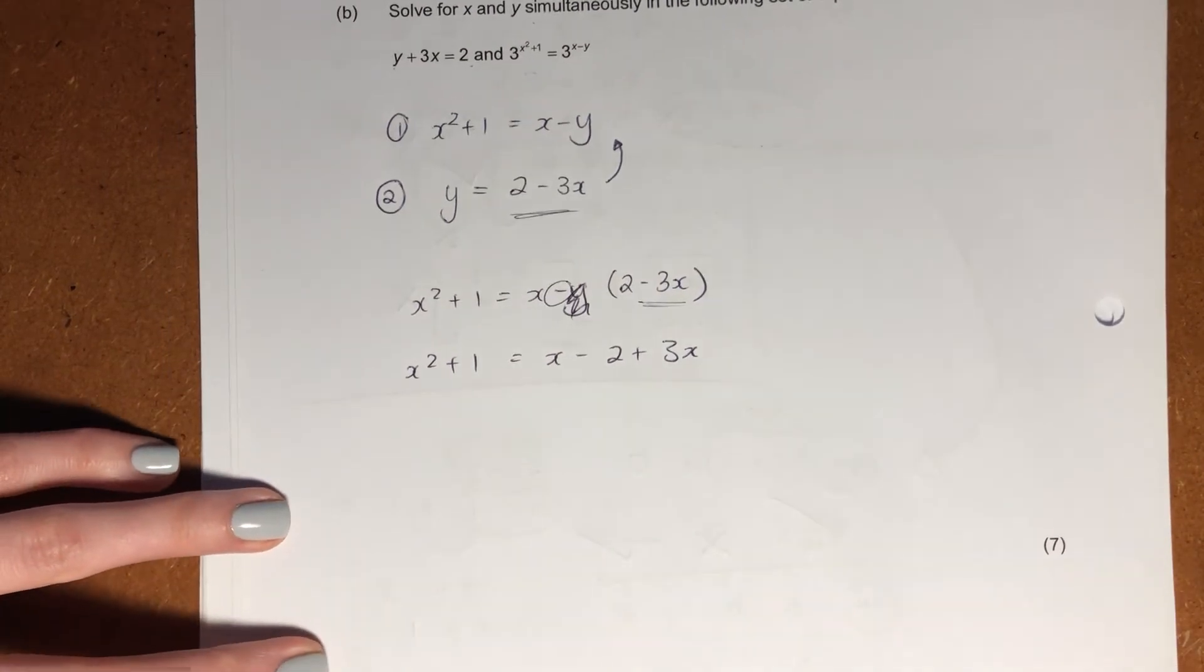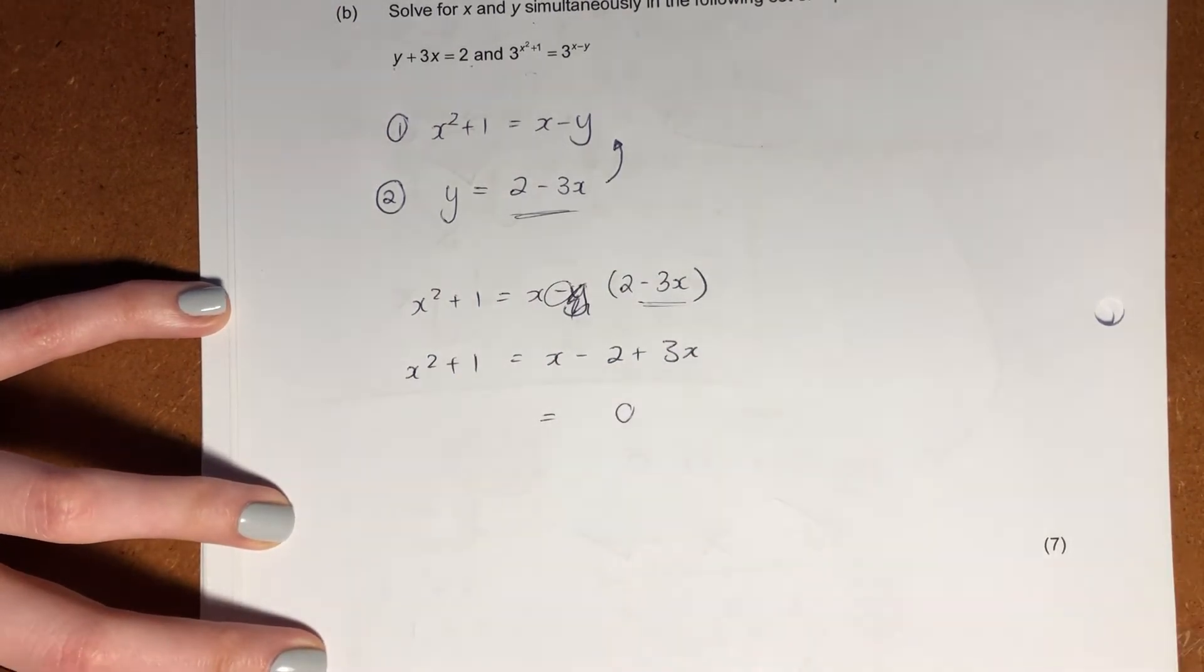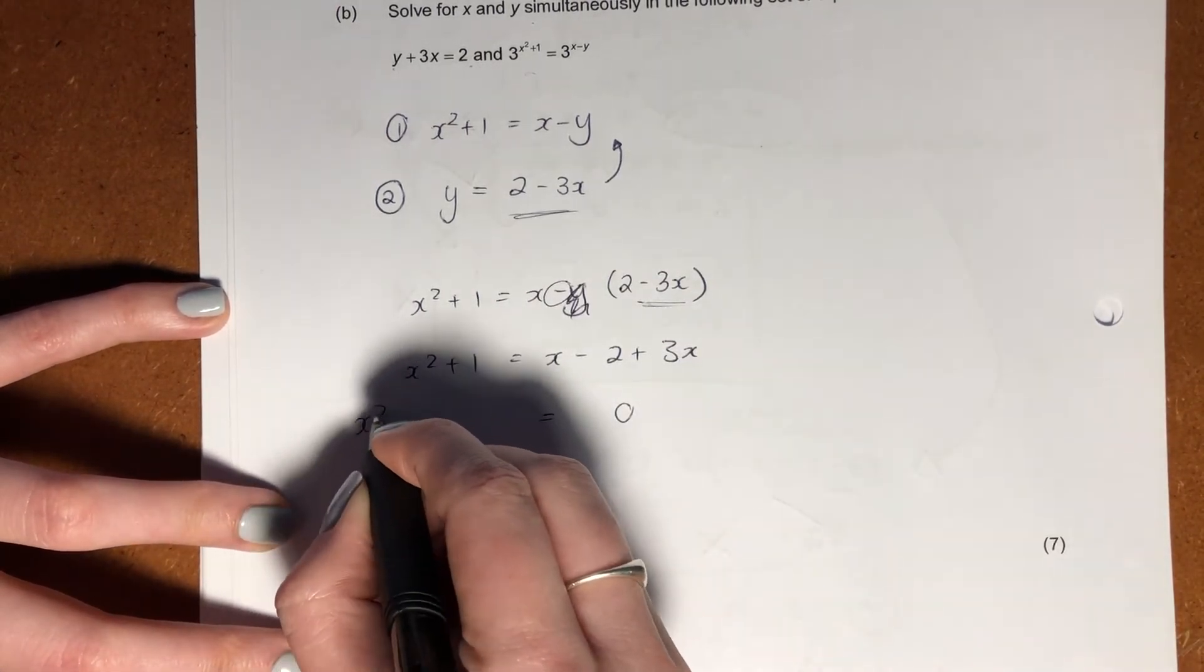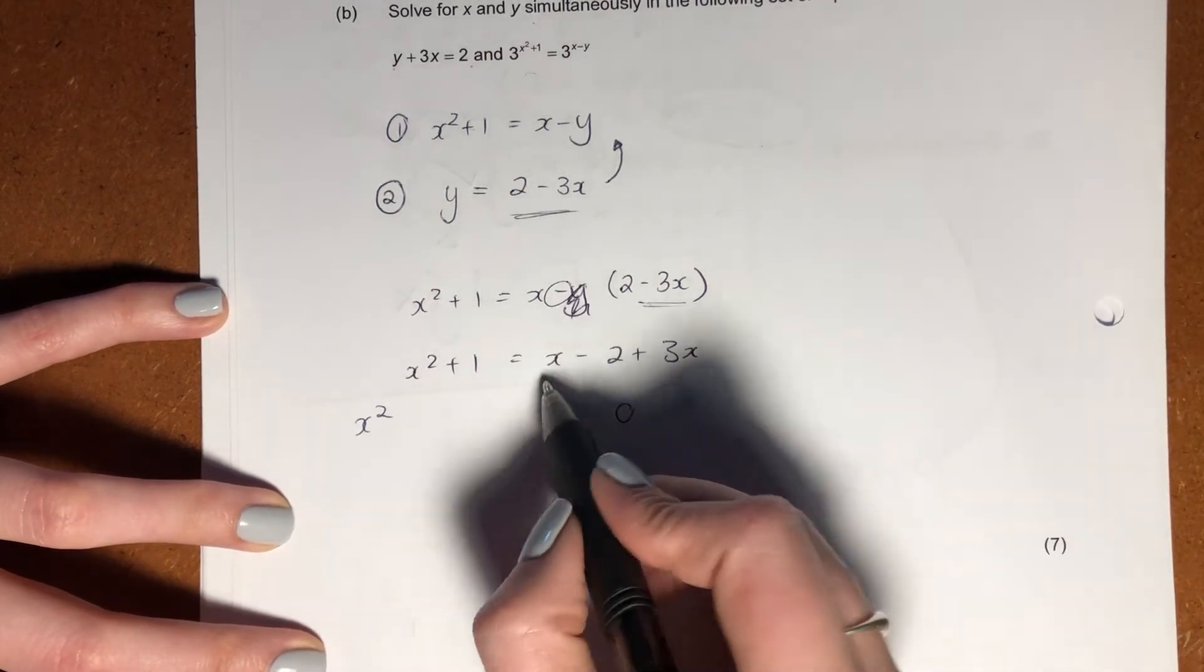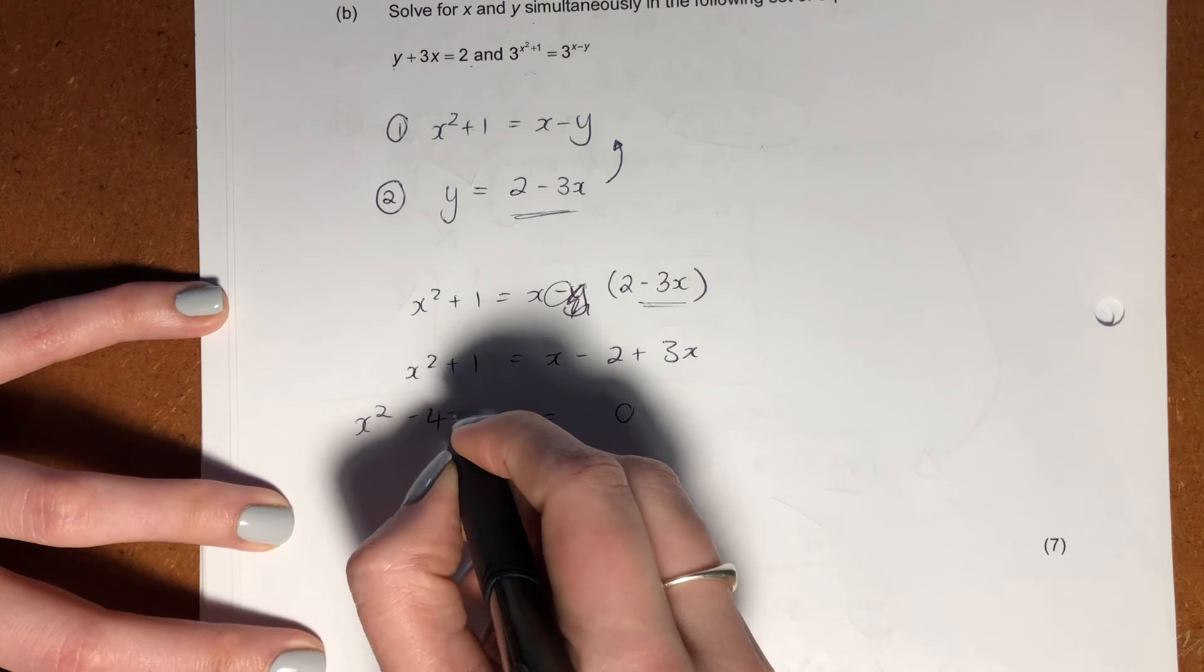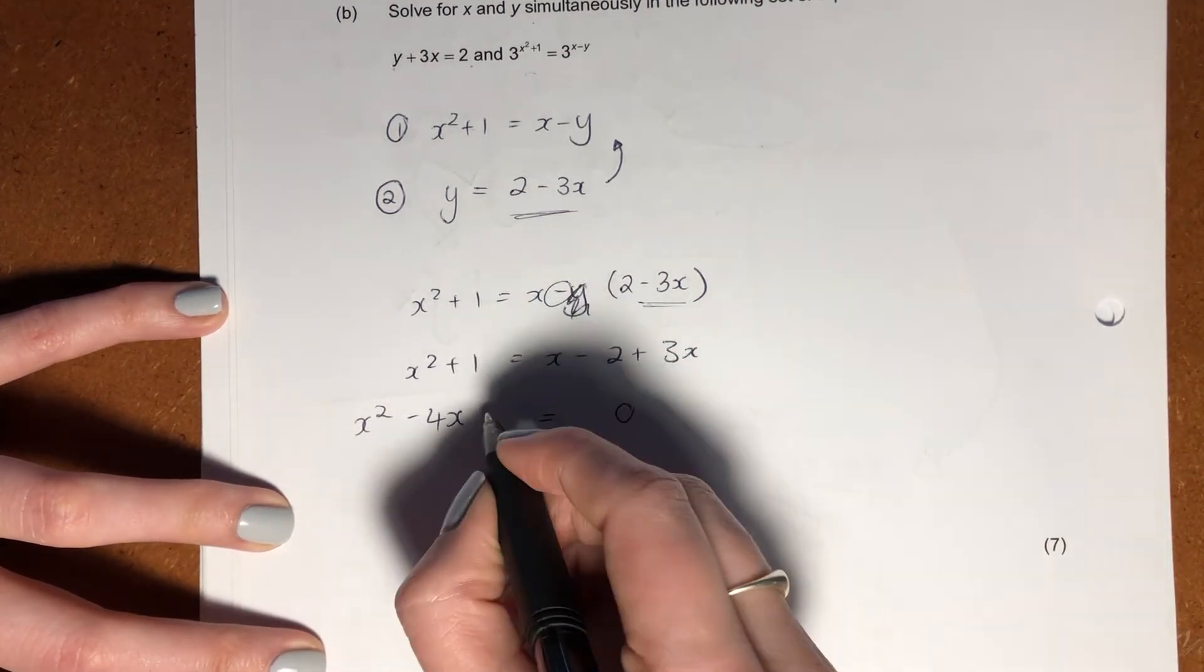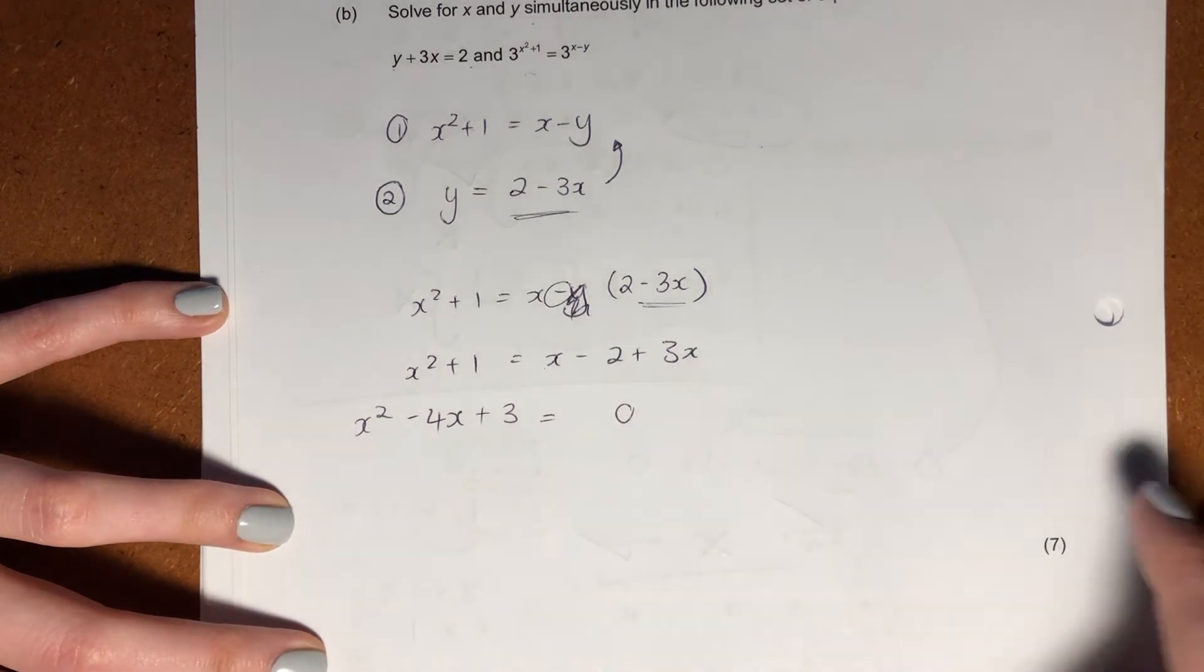Now, what we're going to do is we're going to put everything on the one side and make the other side equal 0. So we have x squared. I'm going to say x plus 3x is 4x. Bring it over becomes negative 4x. Bring negative 2 over becomes positive 3.